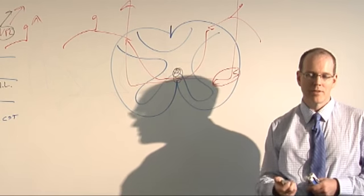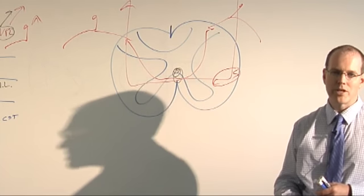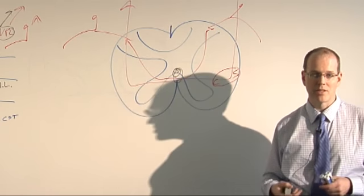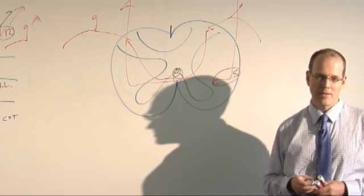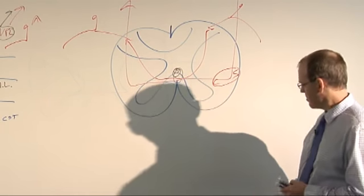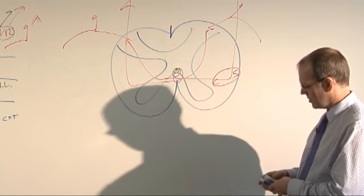So what would that look like? Well, if you have degenerated most of your posterior columns, you don't have good proprioception. So typically, falling is the major manifestation of B12 deficiency.